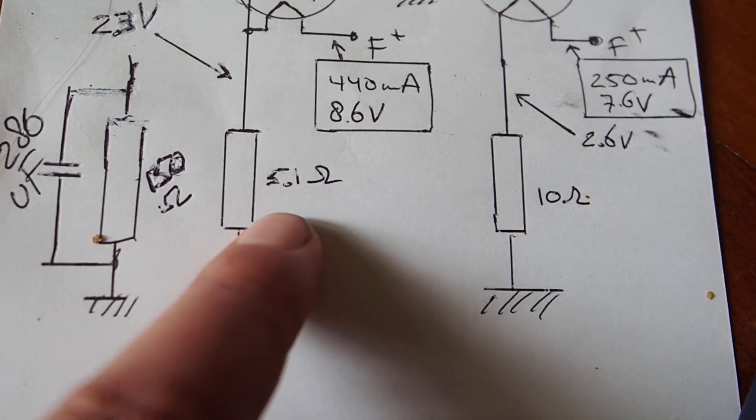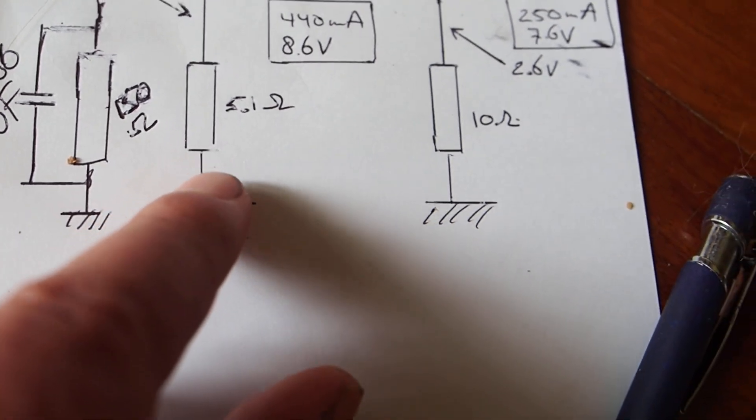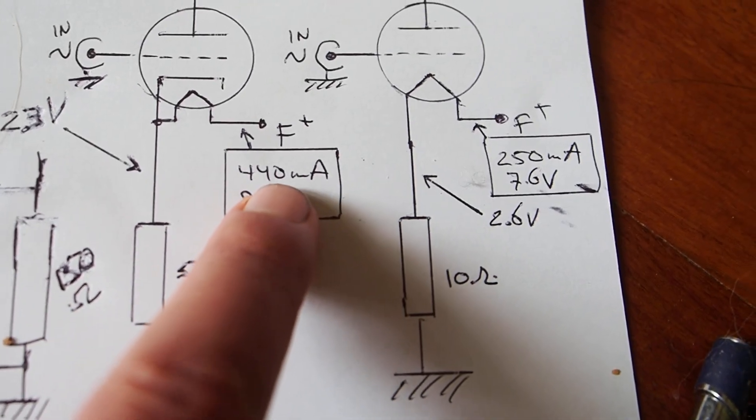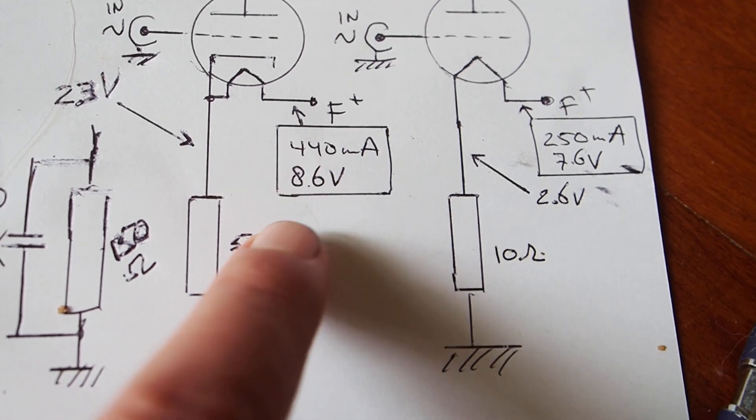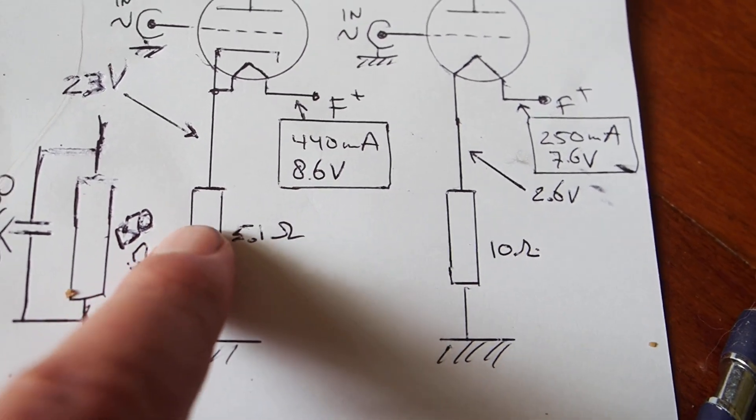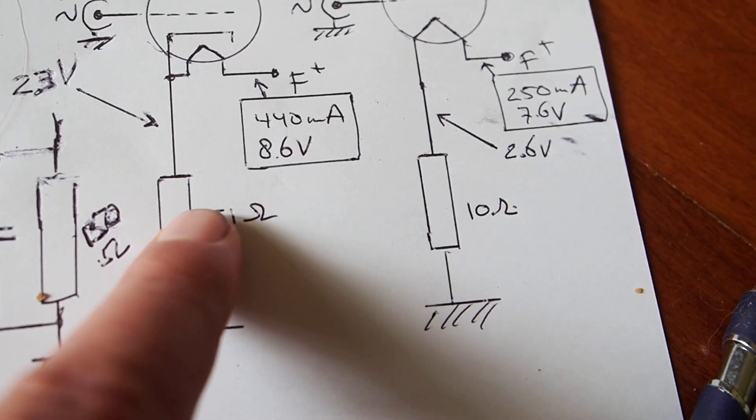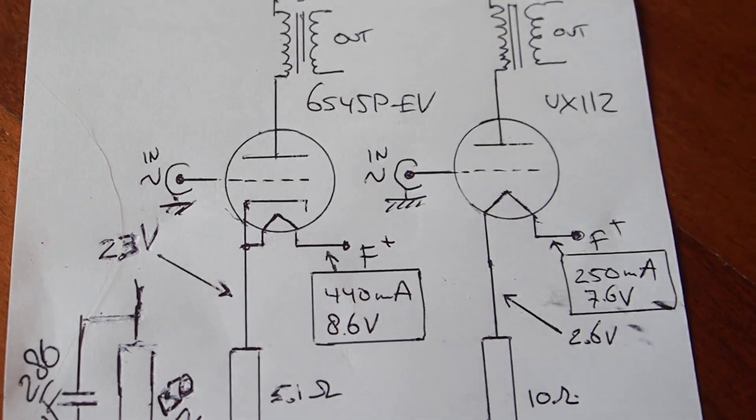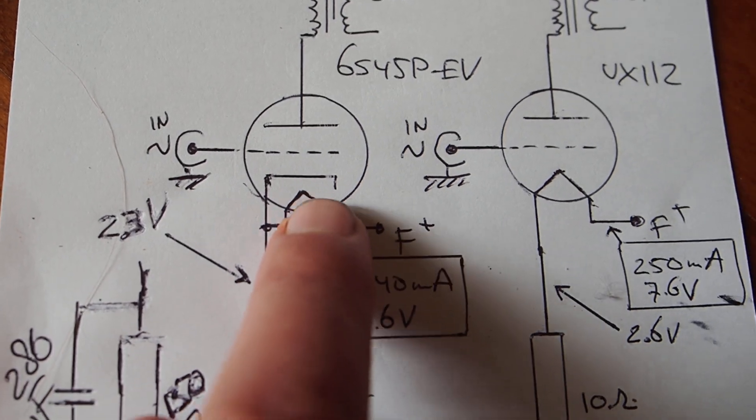However, now if we look at the signal path, we actually now have eliminated the capacitor. Instead we have about a 5.1, 5.2 ohm resistor which is really easy to make of high quality. Because of this type of current it only needs to dissipate about 1 watt in heat, so that's very manageable.